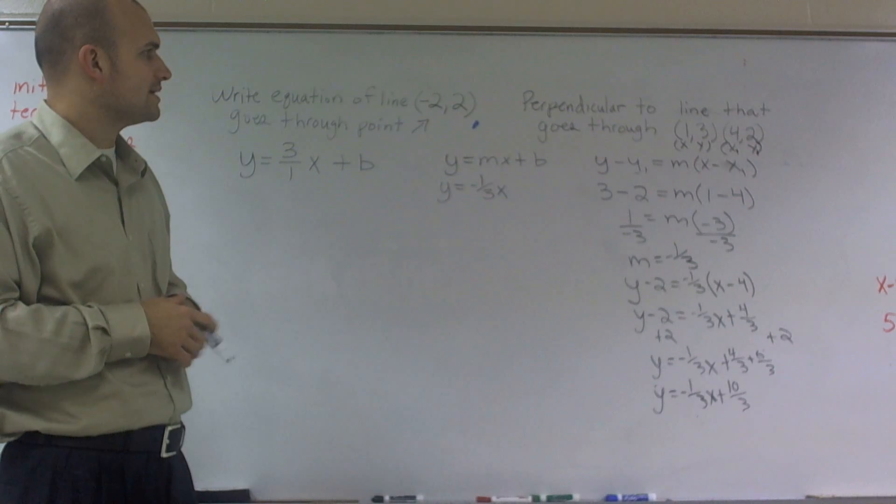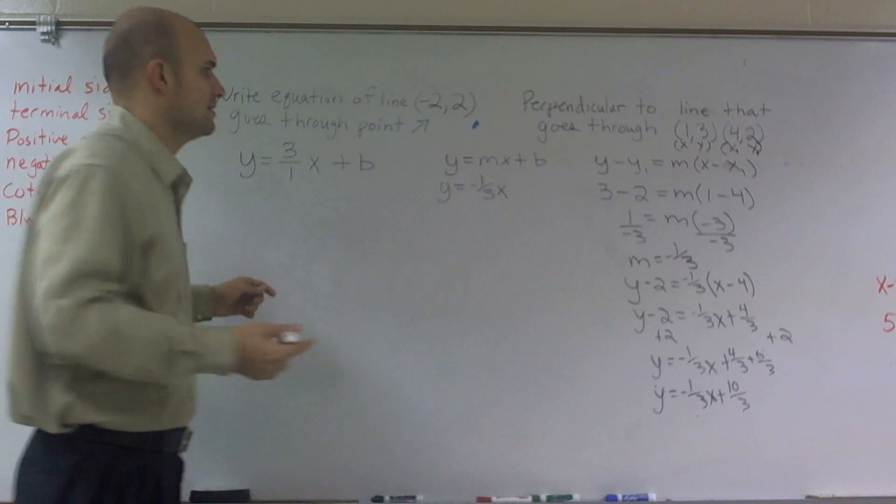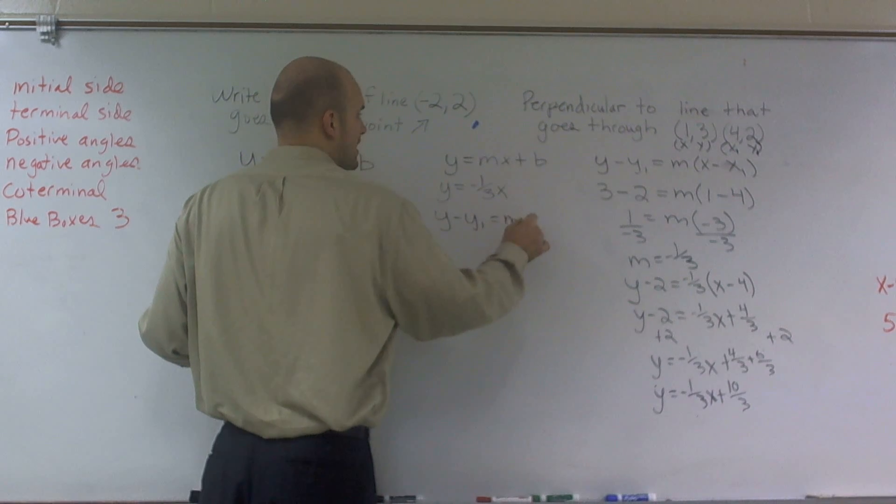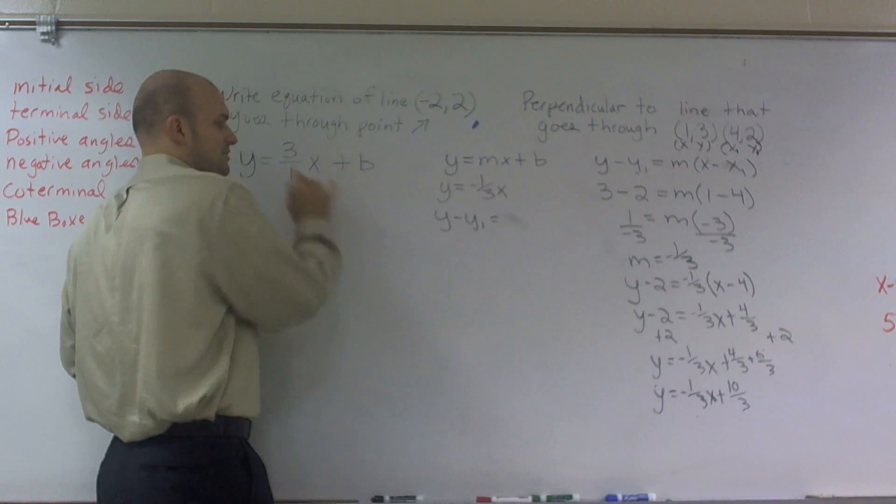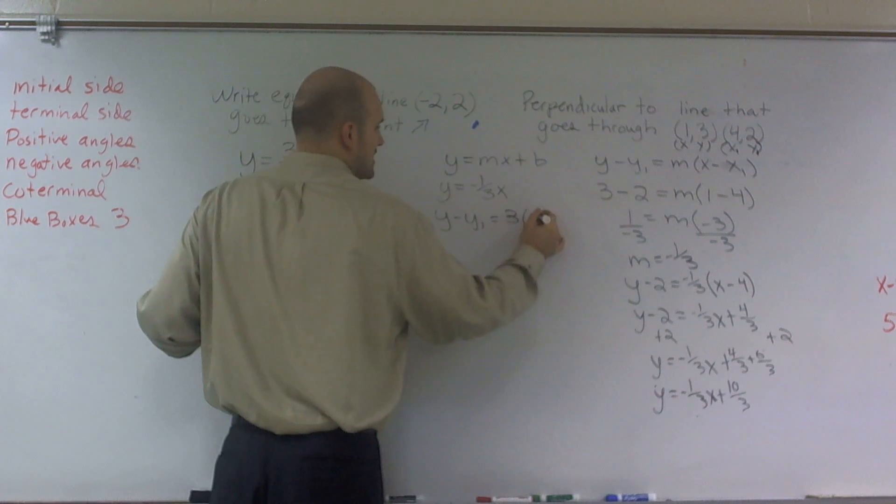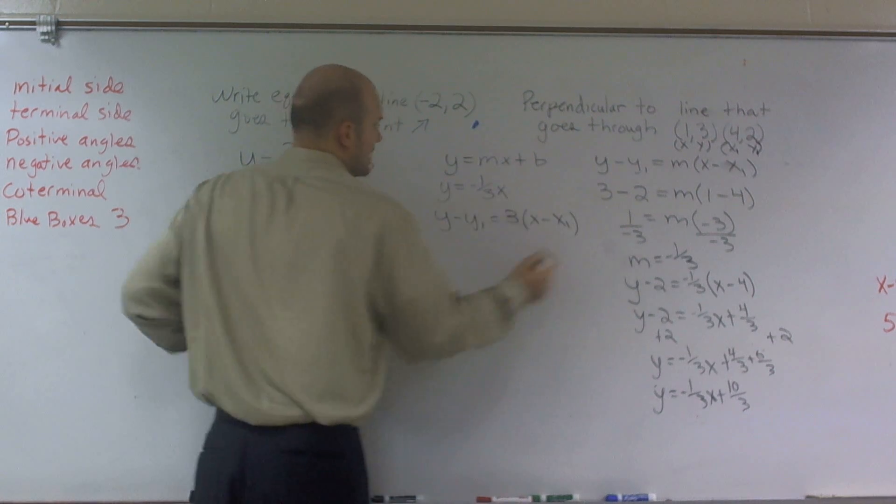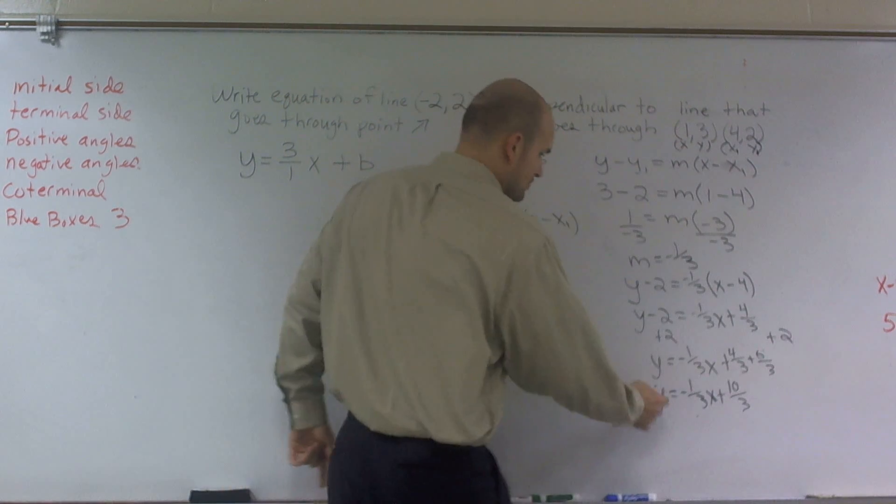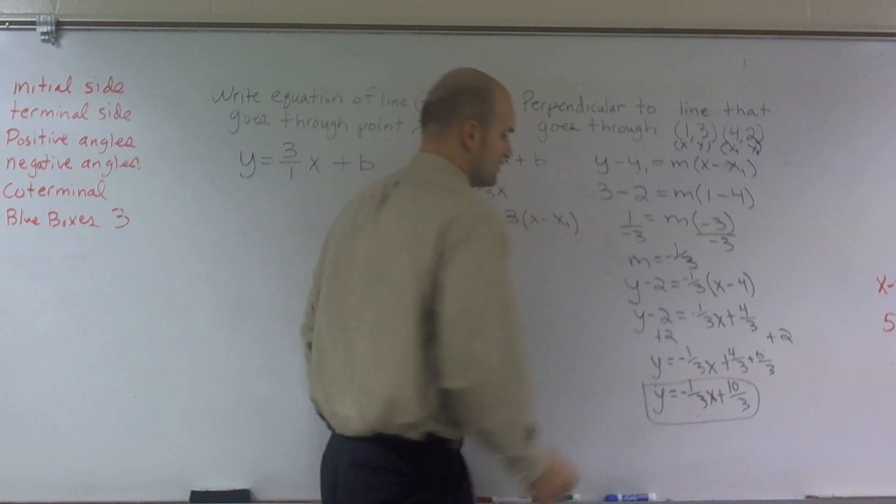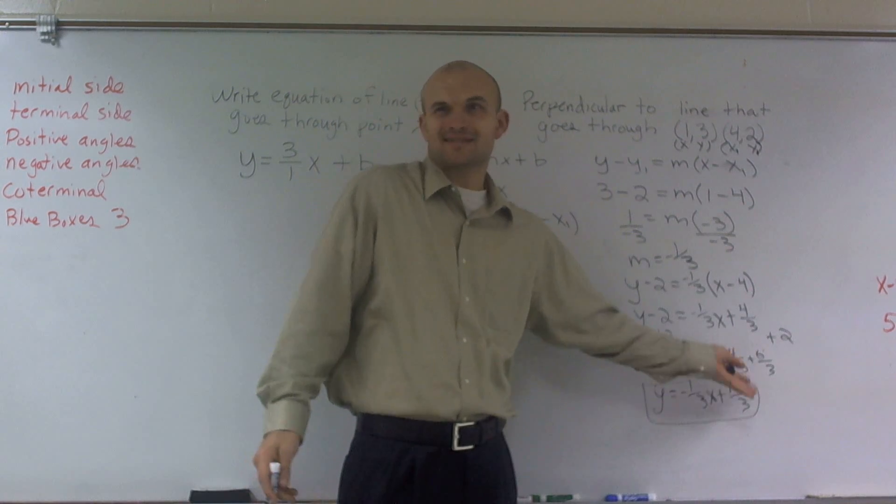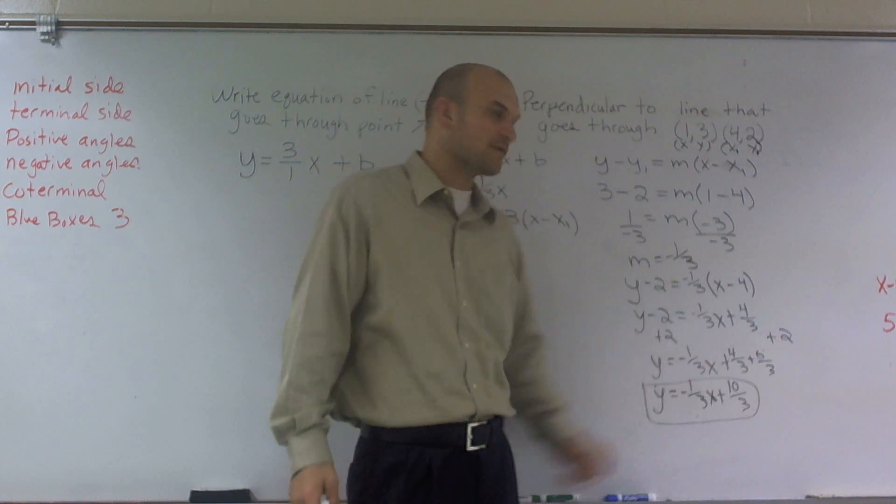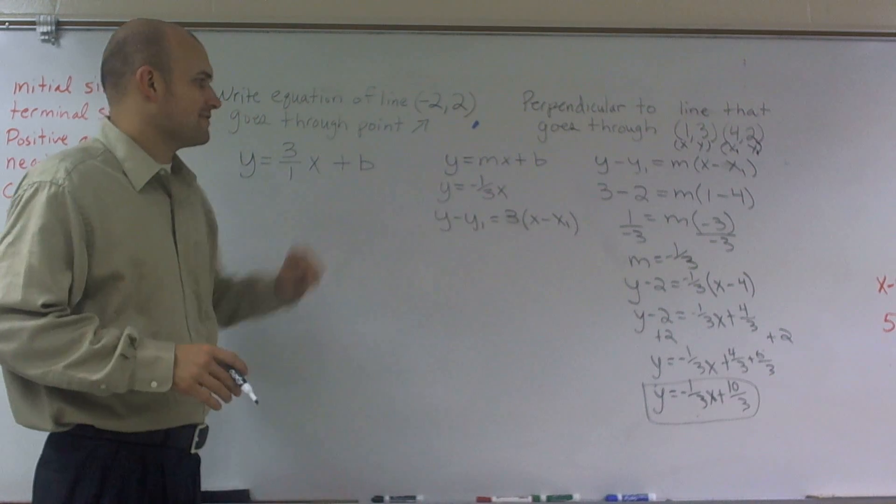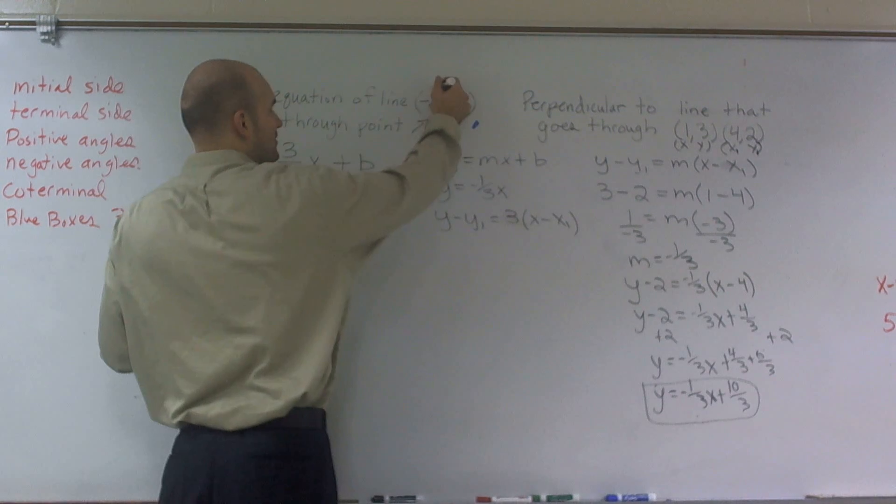We could also use our point-slope form and plug this point in. It doesn't really matter. I'll do it both ways. So let's do y minus y1 equals m. Well, actually not m anymore because we know our new slope is 3 over 1, which is 3, times x minus x1. Now, we're kind of done with these two points. We're not using these anymore because those just gave us what our original line was. And actually, we didn't really need to find out the y-intercept. You just need to figure out what the slope was. But I like to do a little extra work.